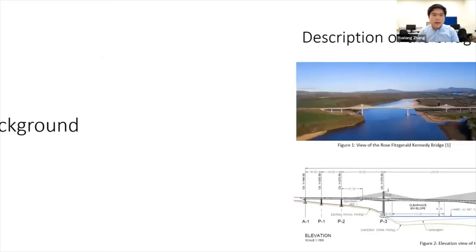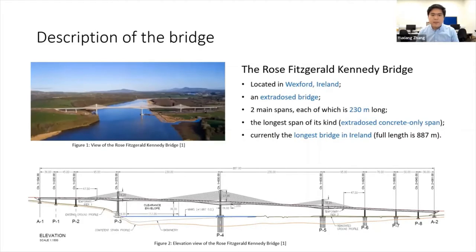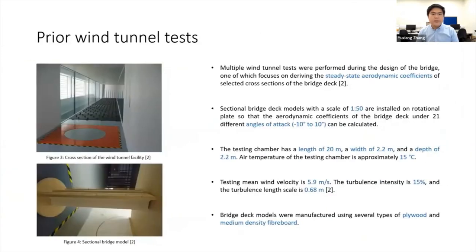In this case study, we're using the Rose Fitzgerald Kennedy Bridge in Ireland. It is an extradosed bridge, which is a hybrid of a cable-stayed bridge and a cantilever box girder bridge. It has the longest extradosed concrete span in the world, and is also currently the longest bridge in Ireland. During the design of the bridge, multiple wind tunnel tests were performed, one of which focused on calculating the aerodynamic coefficients of selected bridge deck sections. A sectional bridge deck model was installed on a rotational plate in the wind tunnel and tested under different angles of attack from minus 10 degrees to plus 10 degrees.